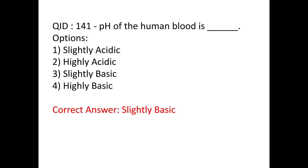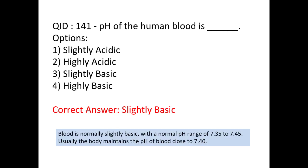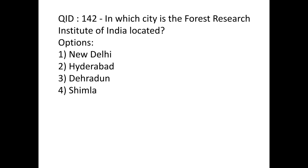What is the pH of human blood? The pH of human blood is slightly basic. Normally the pH range is 7.35 to 7.45, and the pH is usually maintained at 7.40. So remember: the pH of human blood is slightly basic.